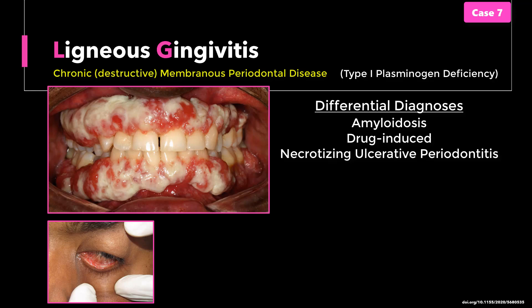Necrotizing ulcerative gingivitis will often resolve after antibiotic therapy and local debridement procedures. Leukemic gingivitis — in this case the laboratory workup will show abnormal white blood cells infiltrating the gingival tissues on histology. Then we have oral squamous cell carcinoma, especially when the lesion is focal rather than generalized. Cases of these disorders will be found in subsequent series of this video atlas.